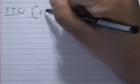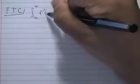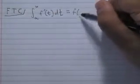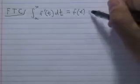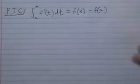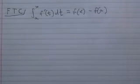We will begin proving this with the Fundamental Theorem of Calculus, which states that the integral from a to x of f prime of t dt equals f of x minus f of a.